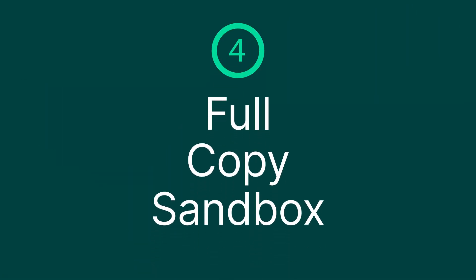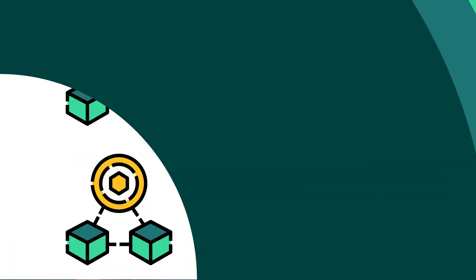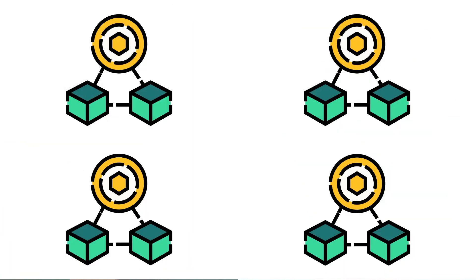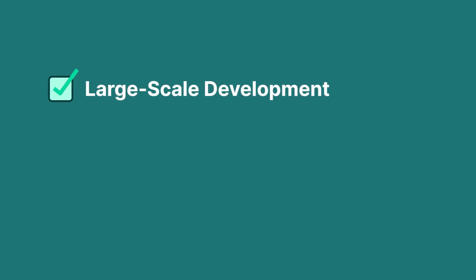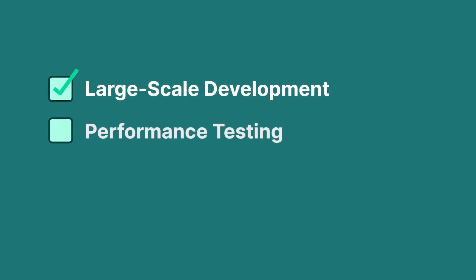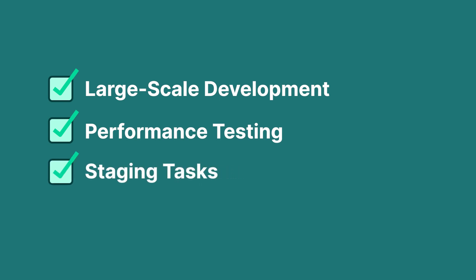Sandbox number four is the full copy sandbox, which is a complete replica of your production environment, including all data and metadata. It's ideal for large scale development, performance testing, and staging tasks. You can refresh a full copy sandbox every 29 days.